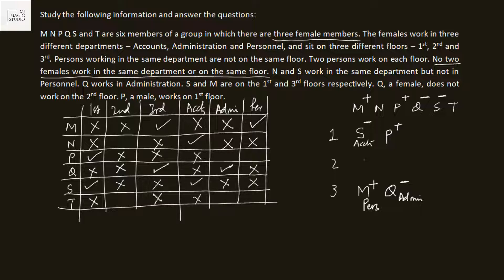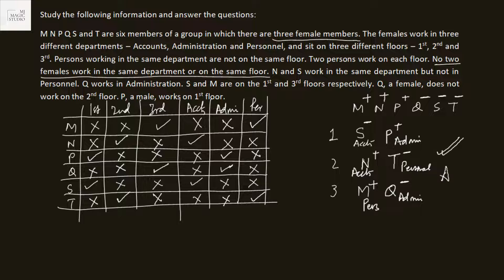On the first floor we already have a person from accounts, so P is not from accounts. Q is in admin, and with only the third floor left, Q is in admin on the third floor and Q is female — meaning M is male. The one female left works in personal. M on the third floor cannot work in admin, so M is working in personal. On the second floor we have N and T: N is from accounts, so N cannot be female — T is from personal and T is female, N is male. P is also from admin. Final answer: Floor 1 — P (admin, male), S (accounts, female). Floor 2 — N (accounts, male), T (personal, female). Floor 3 — M (personal, male), Q (admin, female).